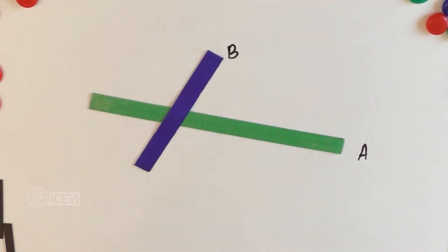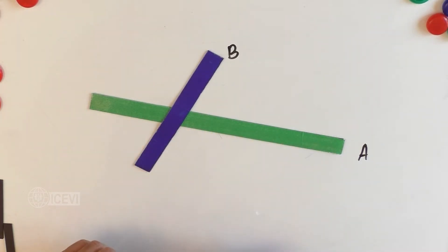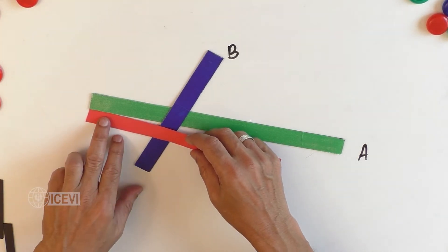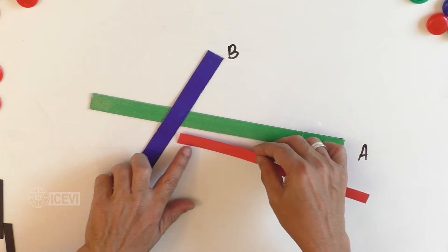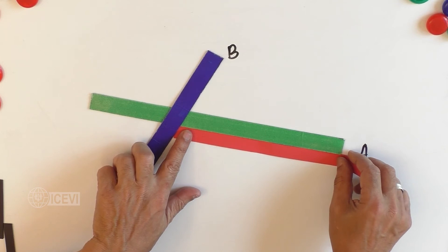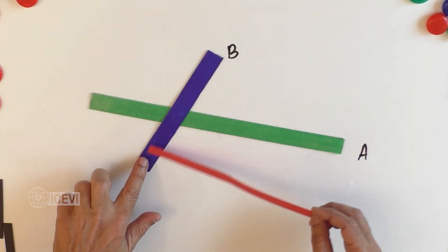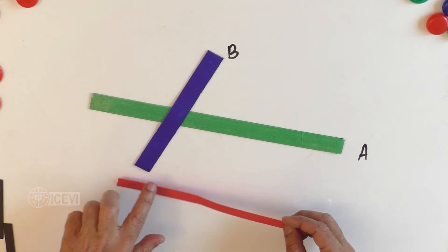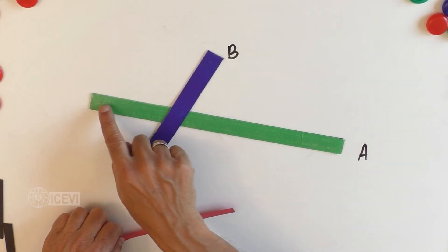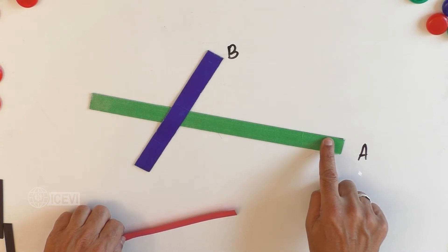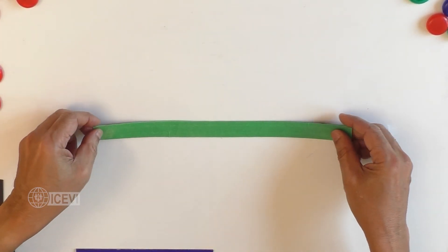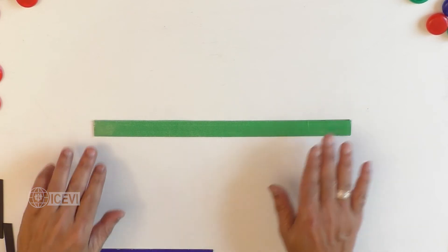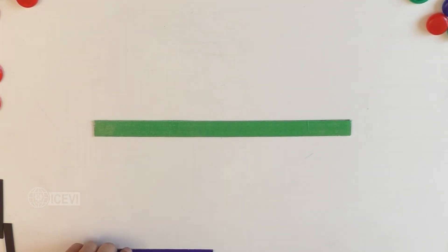One thing that should be noticed: these two lines are going through each other, but at the point of intersection, one side of the line is different from the other side. Line B is going through line A, but line B is not dividing line A into two halves. These are intersecting lines, but one line is not making the other into two halves at the point of intersection.